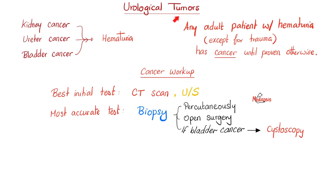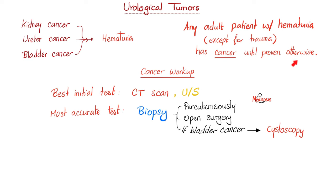Urological tumors include kidney cancers, ureter cancers, and bladder cancers. All of them can give me blood in the urine. Any adult patient with hematuria, unless it's after trauma, has cancer until proven otherwise.